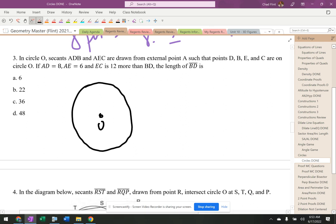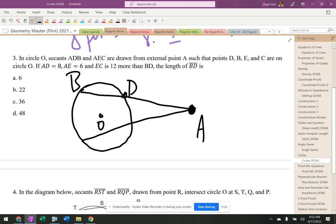So it says in circle O, secants ADB and AEC are drawn from external point A. All right, so we've got an A out here. And then we got this, and we got that. So two secants, I'm just going to draw them. It says ADB, so ADB and AEC.